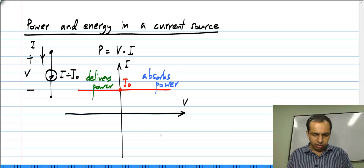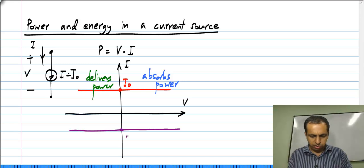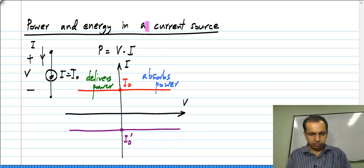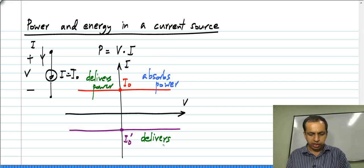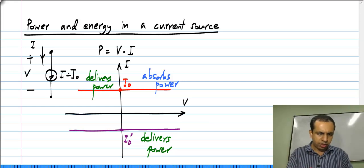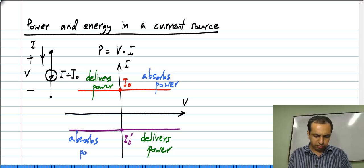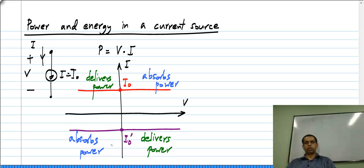Similarly, if we take a negative-valued current source — call it I-naught prime — then in the fourth quadrant where the current is negative and the voltage is positive, the current source delivers power (absorbs negative power), and in the third quadrant it absorbs power. So just like a voltage source, a current source can either deliver or absorb power, meaning it is also not passive.